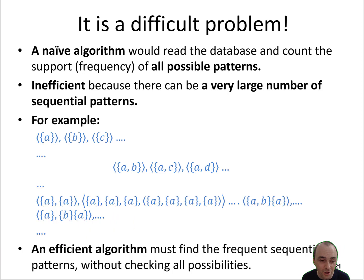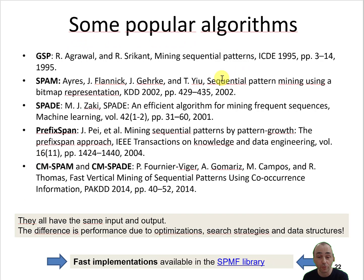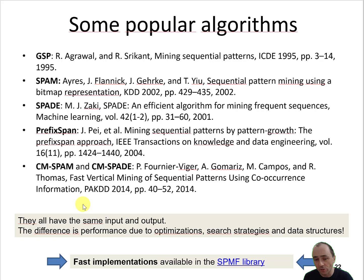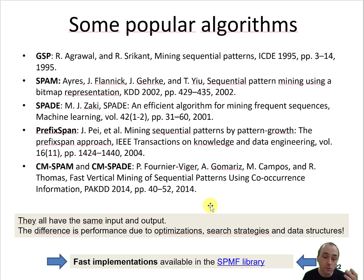There are many algorithms for this problem, such as GSP (one of the first), SPAM, SPADE, and CM-SPADE — some of the most popular. They all have the same input and output; the difference lies in performance due to different optimizations, search strategies, and data structures. Some algorithms are faster or use less memory. If you want to try them, you can look at the SPMF library, which is open source and implemented in Java.